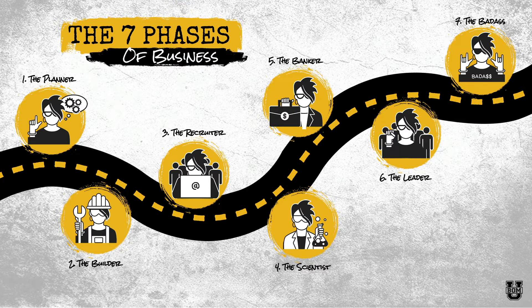We'll talk more about this in future lessons. But ultimately, what you want to do is go back to the earliest phase where you have tasks that are not completed and focus all of your attention on really getting that work done. Then you move to the next phase. By doing this, you'll be doing the right things in the right order.